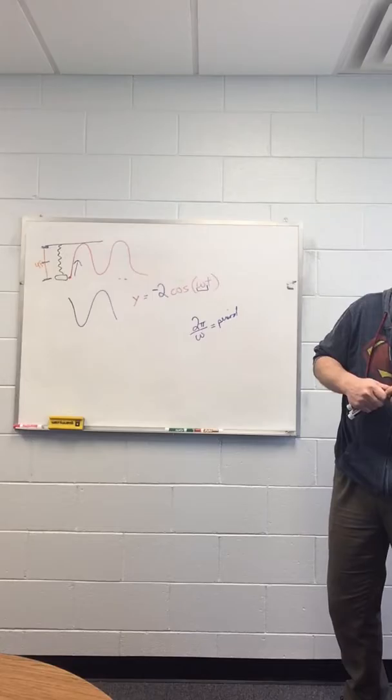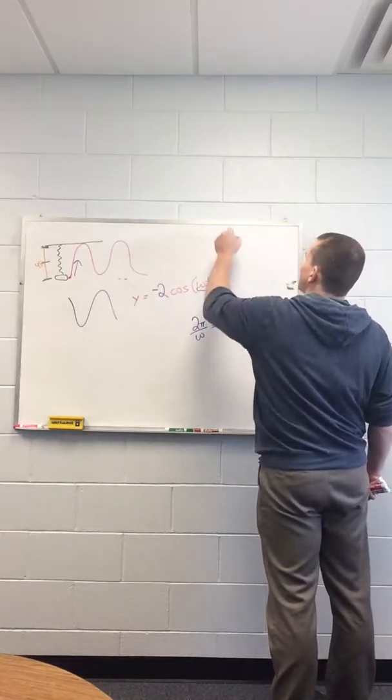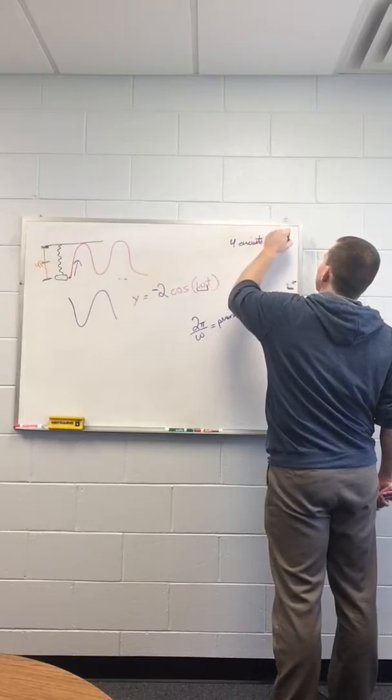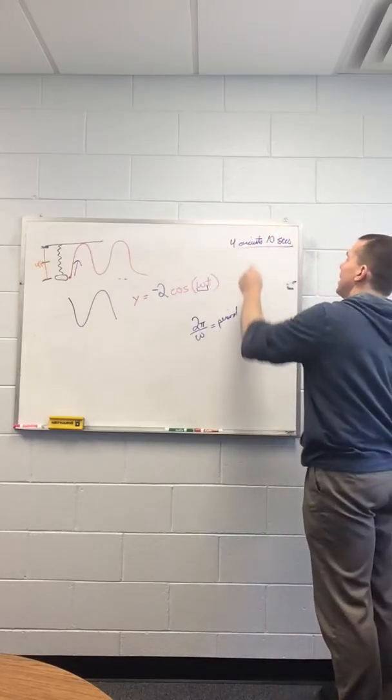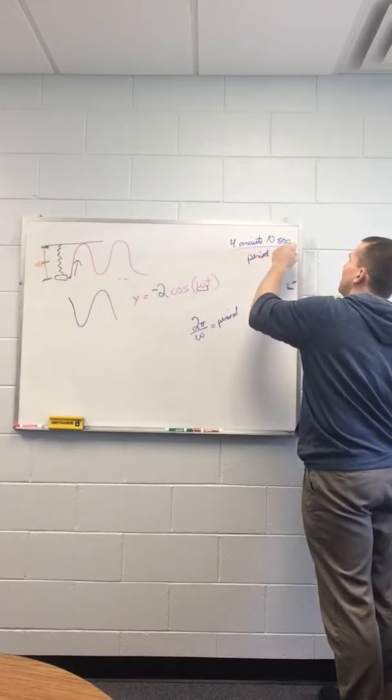We need to find our period then. I time it and the spring completes 4 circuits in 10 seconds. So if it completes 4 circuits in 10 seconds, you can do some quick math. It means the period is 2.5 seconds.